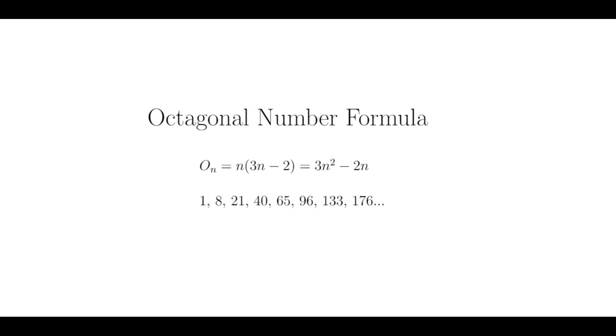We do have a formula for the nth octagonal number. For any positive integer n, O sub n is equal to 3n squared minus 2n. The first few octagonal numbers are listed below.